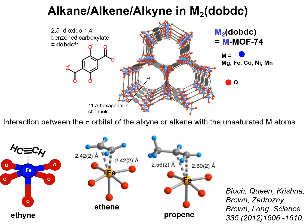The M atoms of MMOF74, where M is either magnesium, iron, cobalt, nickel or manganese, selectively bind with alkynes such as ethyne and alkenes such as propene. This selective binding allows the selective adsorption of alkenes from mixtures with alkanes and selective adsorption of alkynes in mixtures with alkenes.